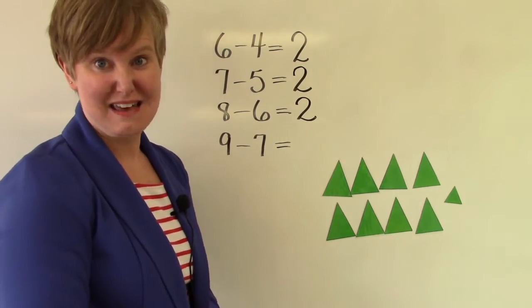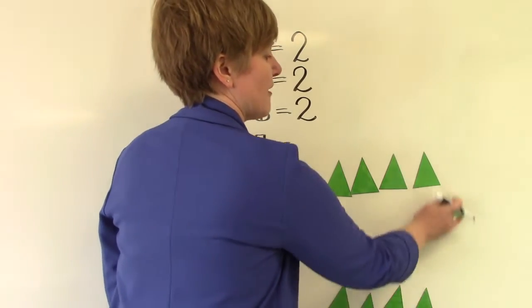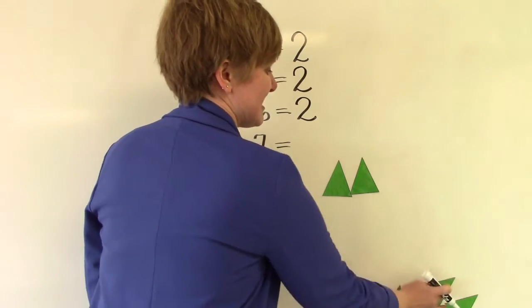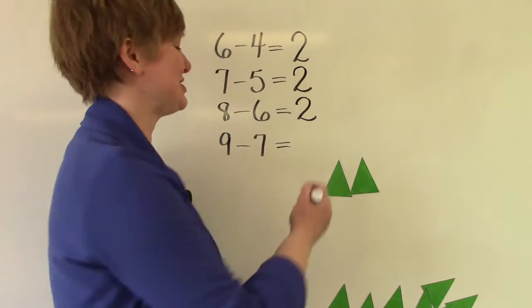Nine take away seven. That's a lot. One, two, three, four, five, six, seven. How many do we have left? It's two.